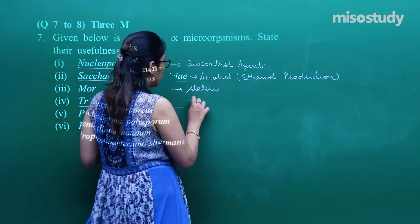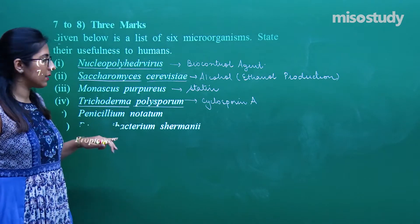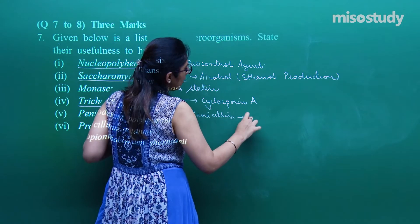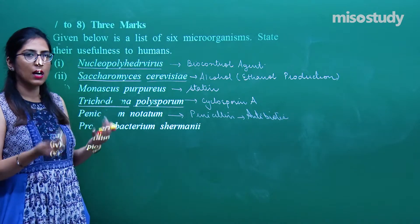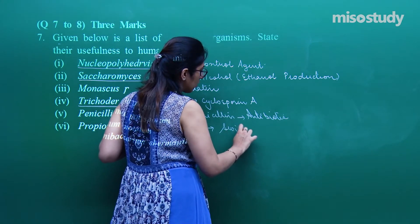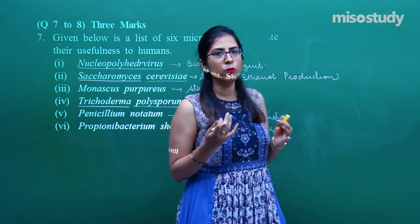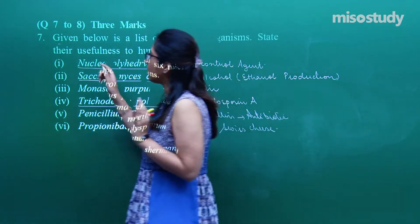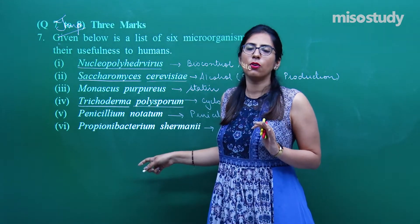Cyclosporin A is an immunosuppressant. Fifth: Penicillium notatum — it helps in the production of penicillin, which is an antibiotic — chemicals produced by living organisms that cause harm to other living organisms. Sixth: Propionibacterium shermanii — this is used for production of Swiss cheese, in which holes are present. These holes are produced because of the release of carbon dioxide. This is a very important question — you should know all six microbes.